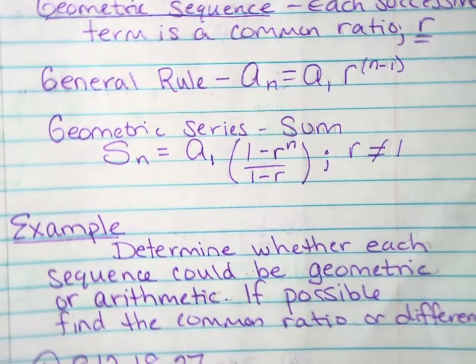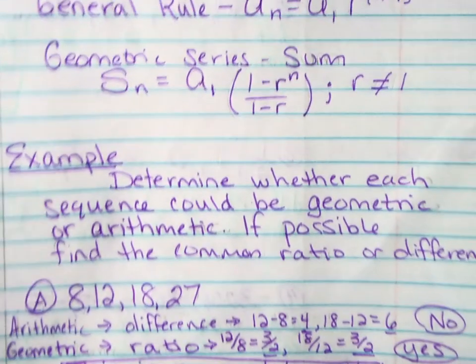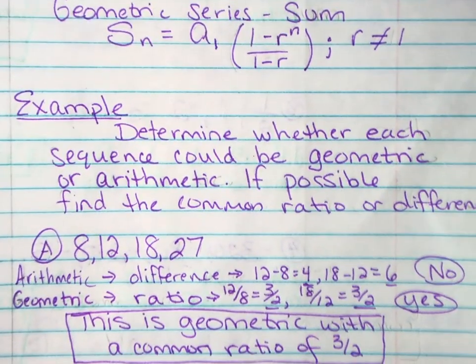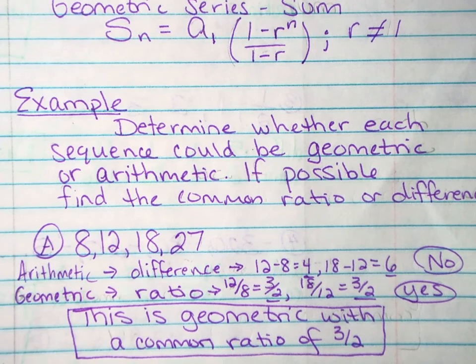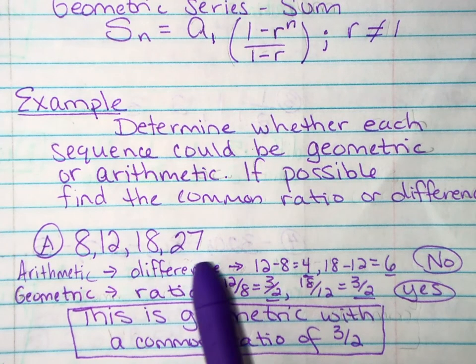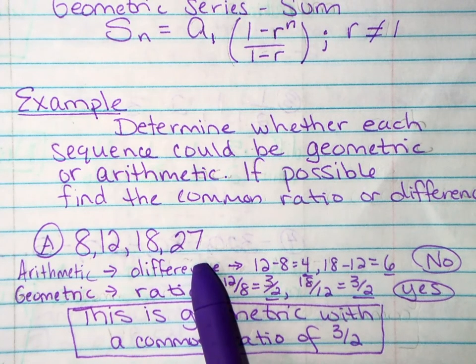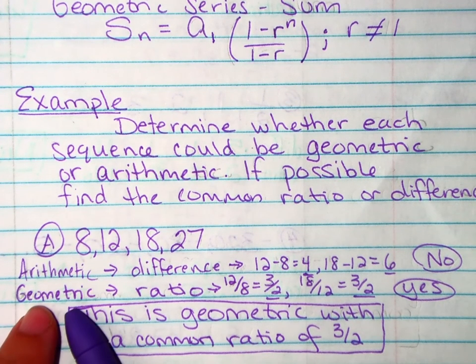So the first thing that we're going to learn is how to determine if it is arithmetic or geometric. So here is our first problem. We have 8, 12, 18, 27. So determine we have to look at both arithmetic and geometric.